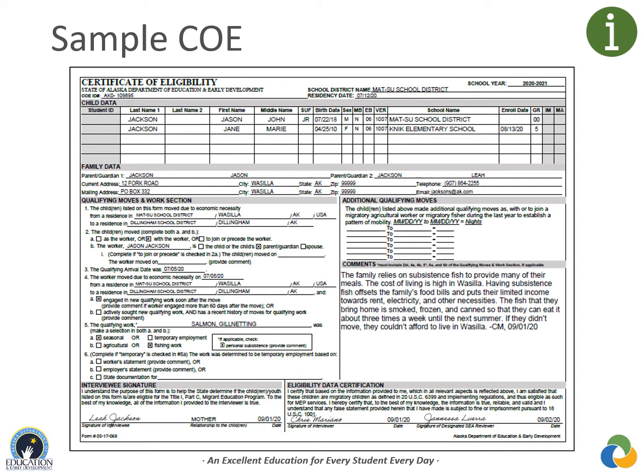This COE is for siblings Jason and Jane, who went gillnetting for salmon with their parents from 7-5-20 to 7-12-20. They went from their home in Wasilla and crossed school district boundaries to fish in Dillingham. This move was for personal subsistence. As we walk through the COE, we will take a closer look at each section of this sample.